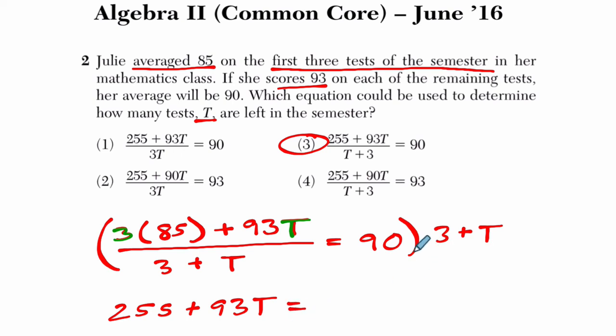And on the right side, we have 90 times 3 and 90 times t. So 90 times 3 is 270. 90 times t is 90t.